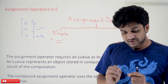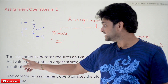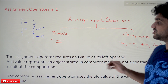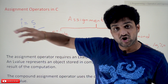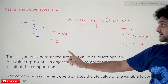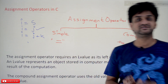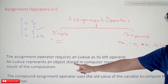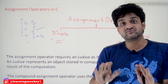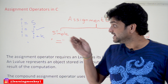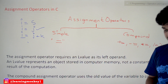One more important point: the assignment operator requires an L-value as its left operand. So the left operand — for example, I in I = 5 — must be an L-value. An L-value represents an object stored in computer memory, which is what we call a variable. The L-value should always be a variable; it should not be a constant or an expression.